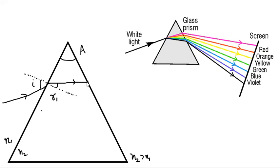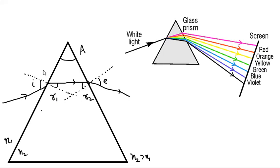Now light is at this point and is moving from denser to rarer, so it will bend away from the normal. First you have to draw a normal here, and now light will go like this. This is your angle of emergence, and this is angle r2. Suppose this point is B, this point is C, and this point is D. If you extend the incident ray and extend the emergent ray, then this will be your angle of deviation.